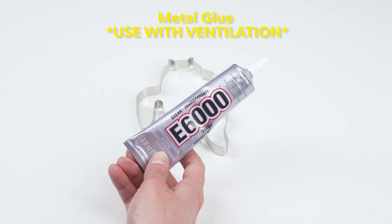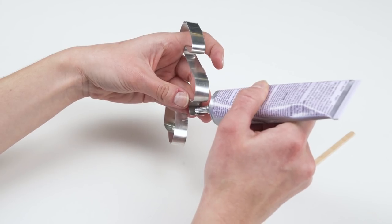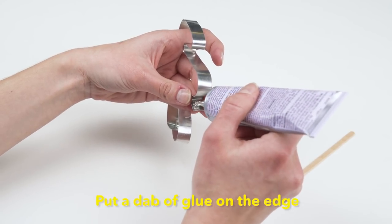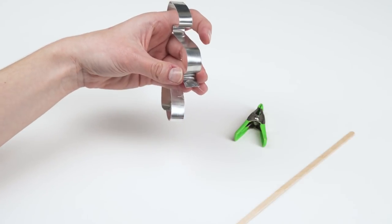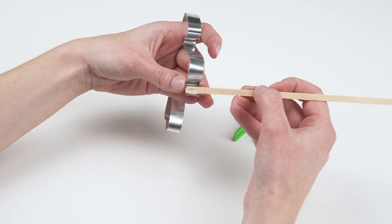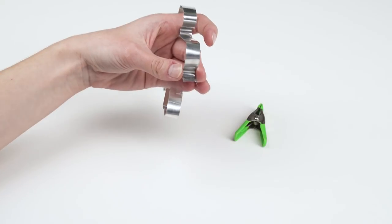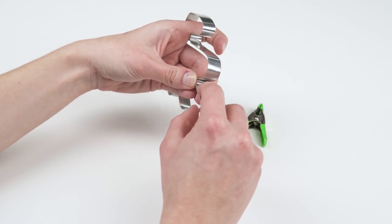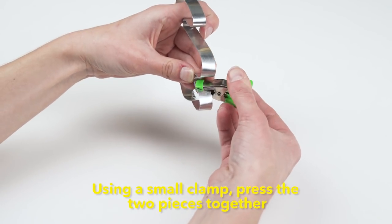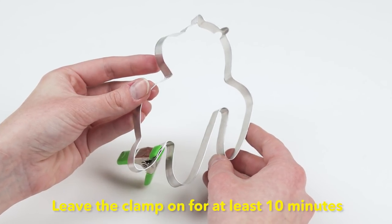For this step, you will need to use glue with ventilation, so do not use indoors. I'm just going to use a tiny dab of glue on the edge and then clean away the extra with a coffee stir stick. Then use a small clamp to press that together. Let this dry for at least 10 minutes.